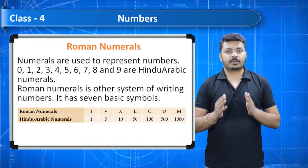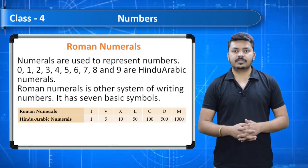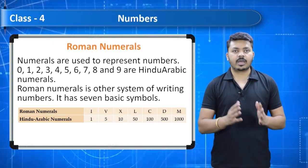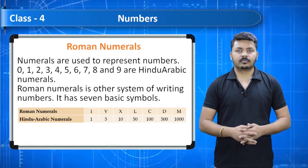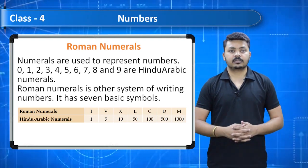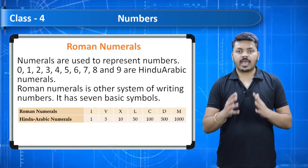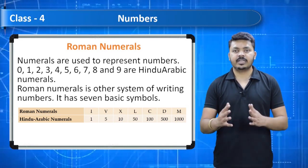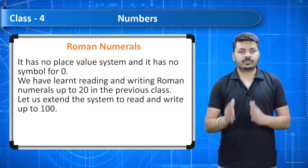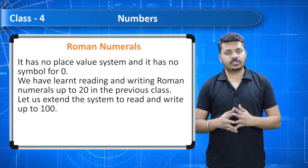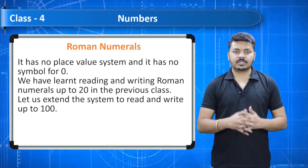Roman numerals: the digits 0–9 are Hindu-Arabic numerals. Roman numerals are another system of writing numbers with 7 basic symbols: I for 1, V for 5, X for 10, L for 50, C for 100, D for 500, and M for 1,000. Roman numerals have no place value system and no symbol for zero. We have learned Roman numerals up to 20 in the previous class; now we extend the system to read and write up to 100.